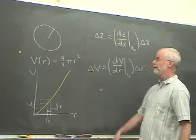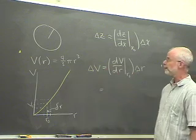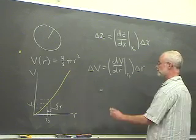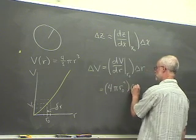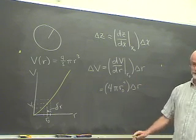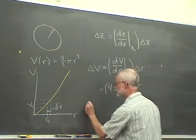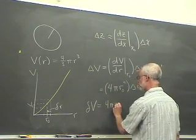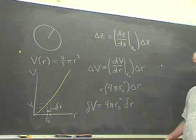We can work out the details simply enough. v of r is four-thirds pi r cubed; the derivative of four-thirds pi r cubed with respect to r is 4 pi r squared. We evaluate 4 pi r squared at r equals r0, so this term in parentheses is 4 pi r0 squared, multiplied by delta r. Changing notation back to uncertainties, the uncertainty in the volume of the sphere is equal to 4 pi r0 squared times the uncertainty in the radius of the sphere. That's our result.